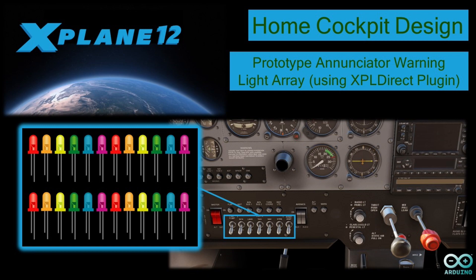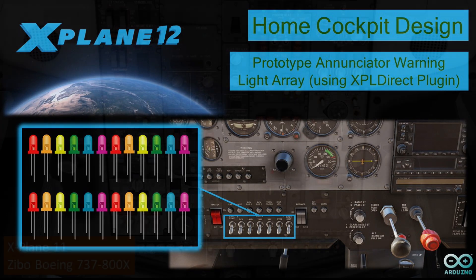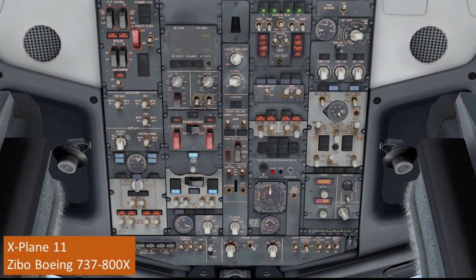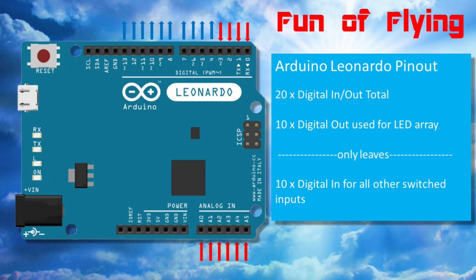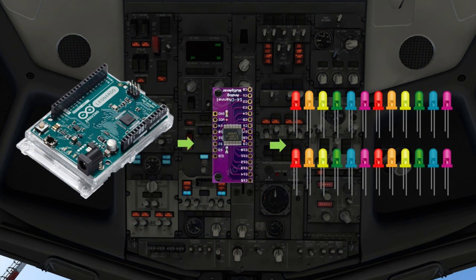There are 101 different things you could use enunciator warning lights for in a home cockpit setup, and if you just chose 10 of them, this would immediately result in a lot of LED output wires connected back to your microcontroller. Given that this microcontroller would most likely be an Arduino Leonardo — simply because of its native USB capabilities — it certainly wouldn't leave you many pin terminals to play with as far as any inputs were concerned.